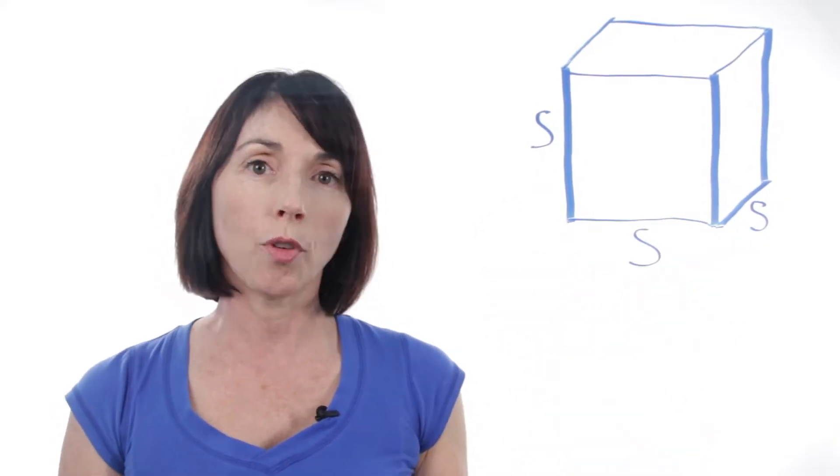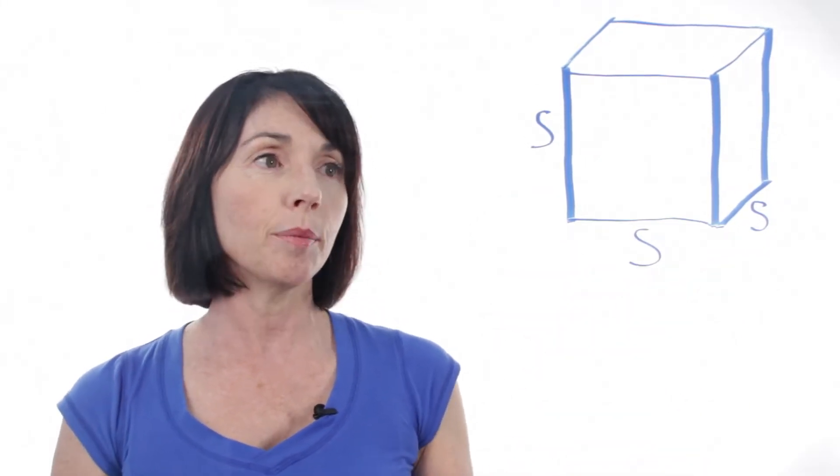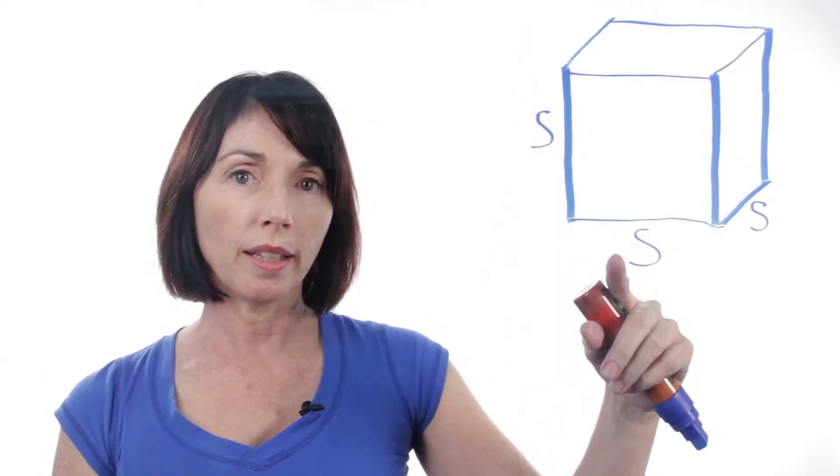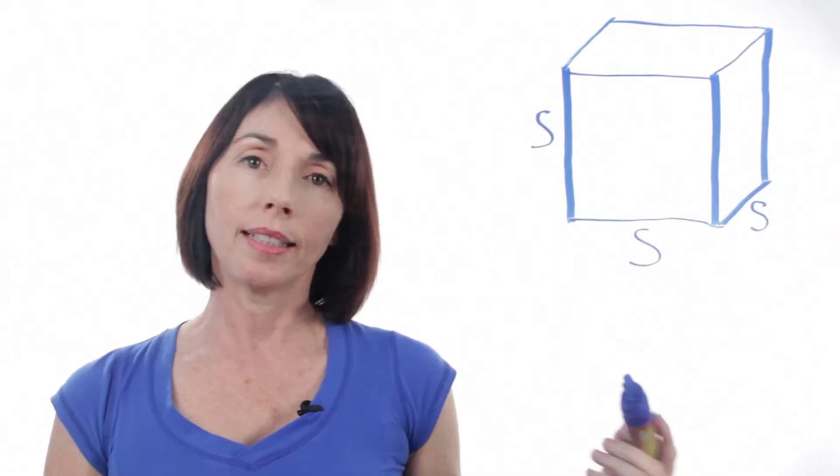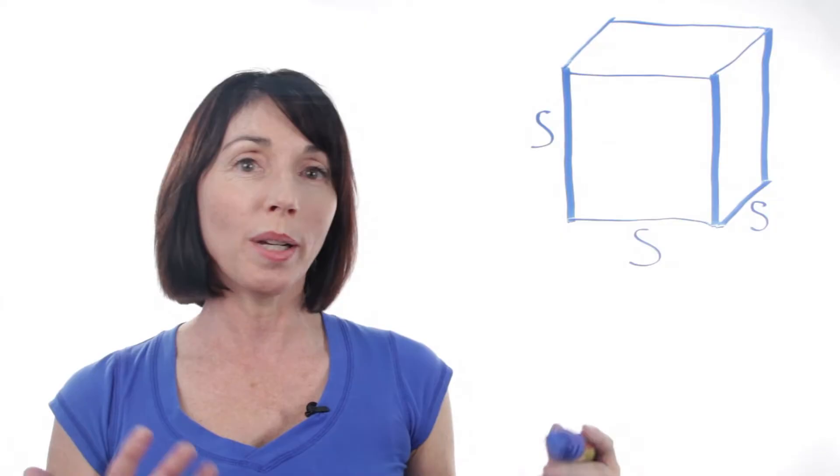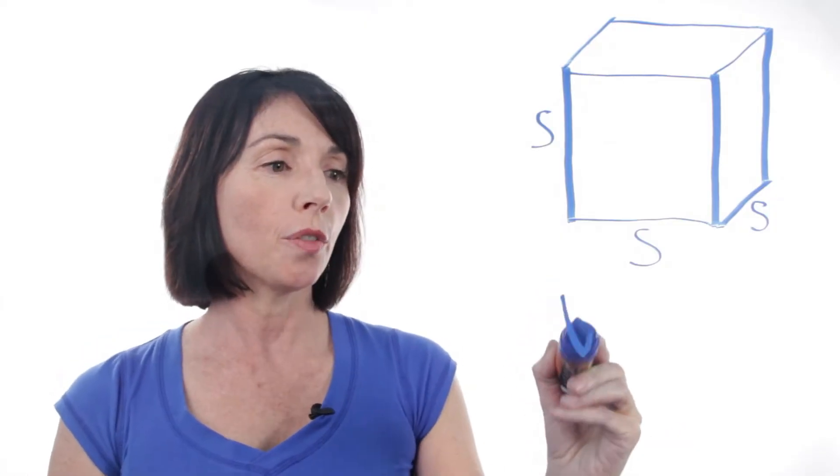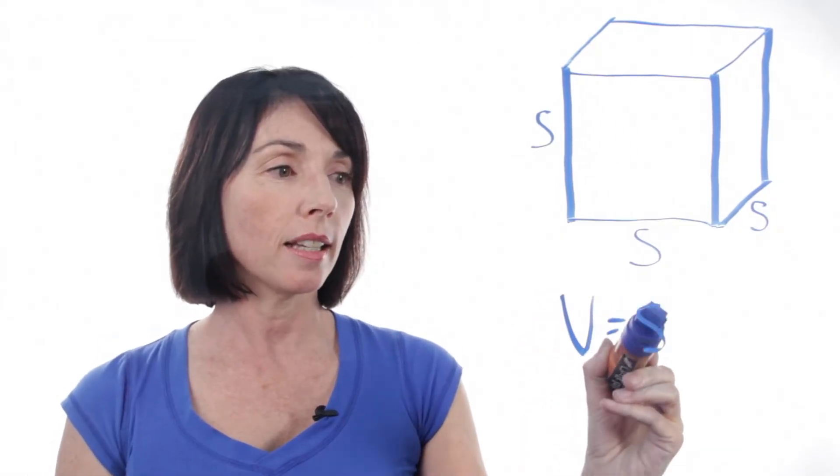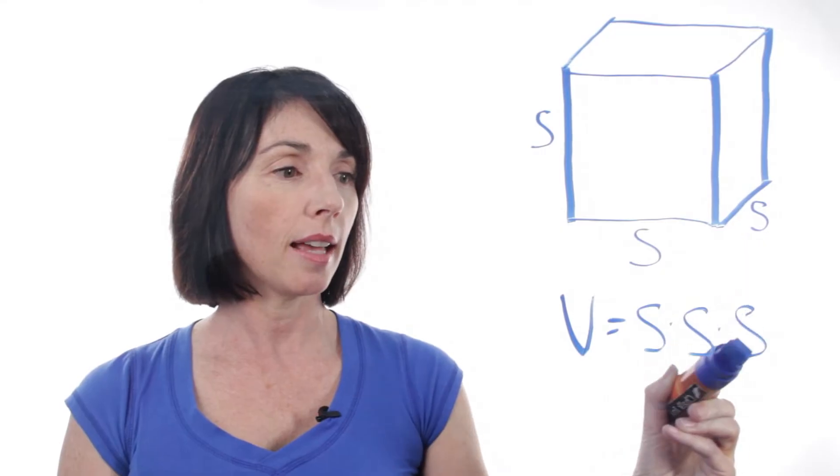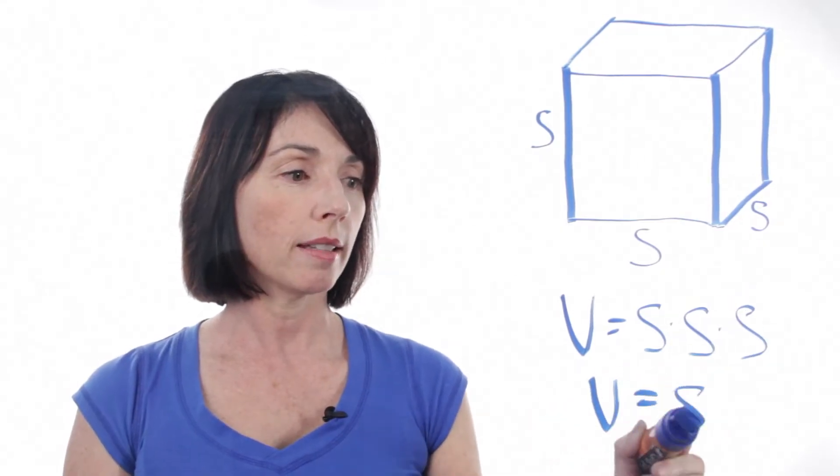Now the volume formula is pretty easy. It's simply the length times the width times the height. Now it doesn't really matter for a cube which you call which, because they're all the same. So the volume is just s times s times s, or s cubed.